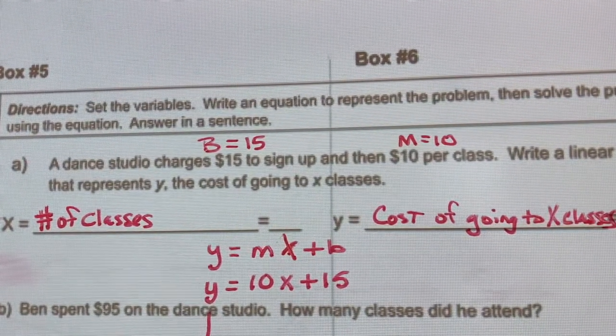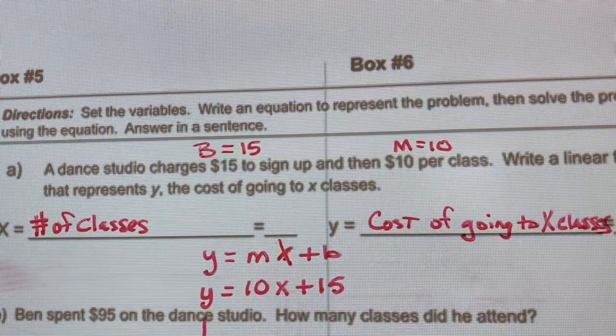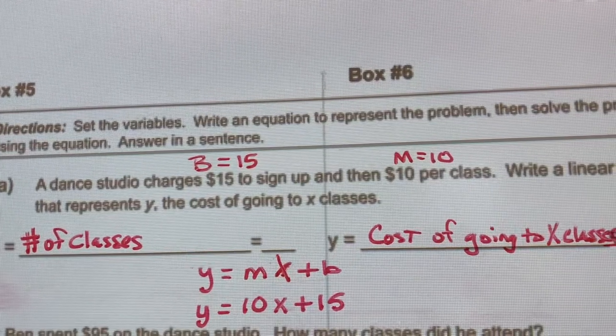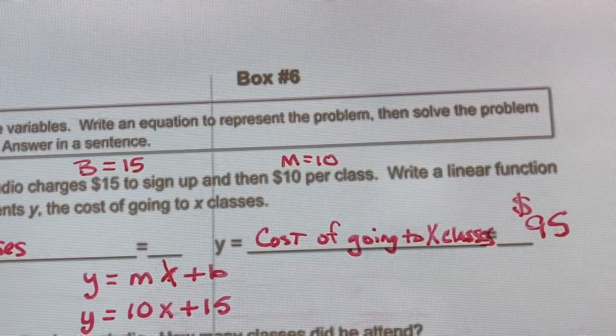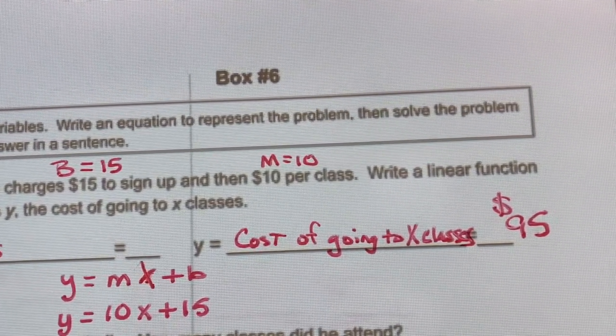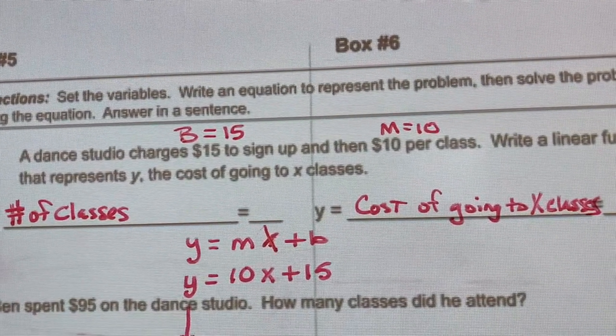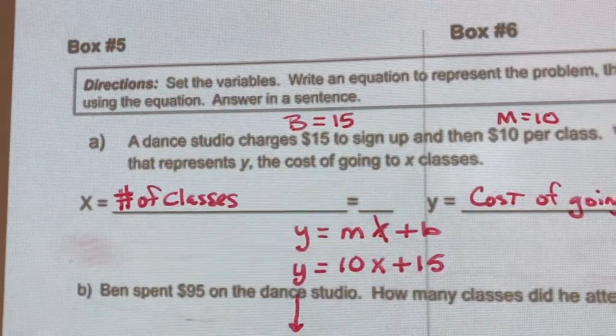The dance studio charges $15 to sign up. The $15 is where it begins. And then it costs $10 per class, and that is the slope. Then write a linear function that represents y, the cost of going to x classes.